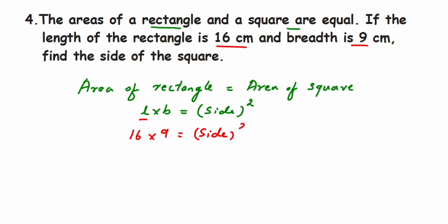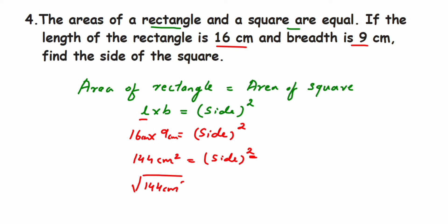Substituting: length times breadth equals side squared. So 16 times 9 equals side squared, giving 144 centimeters squared equals side squared. To find the side, we take the square root: √144 = 12. Therefore the side of the square is 12 centimeters.